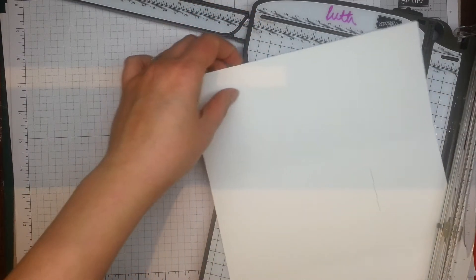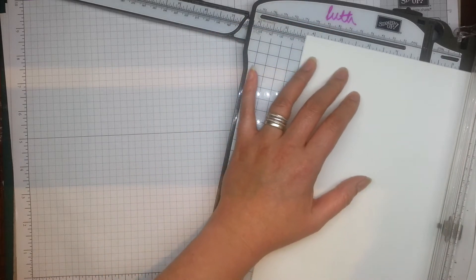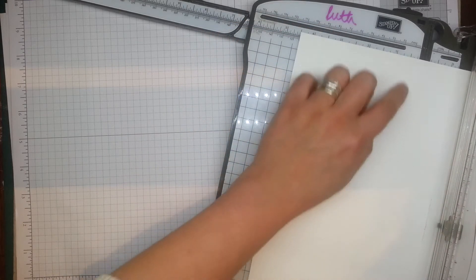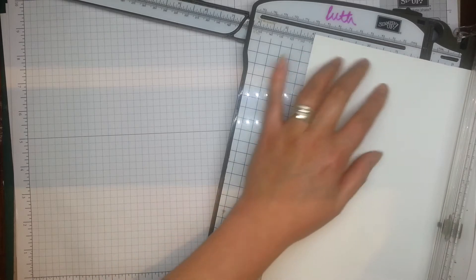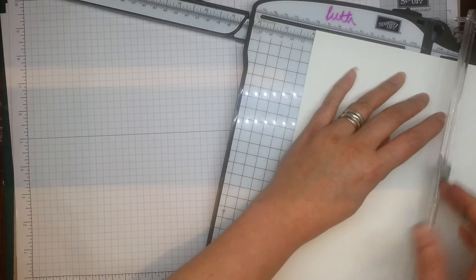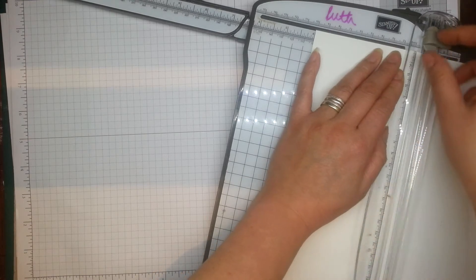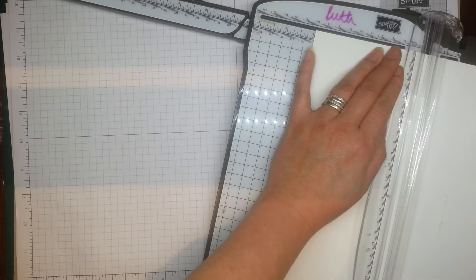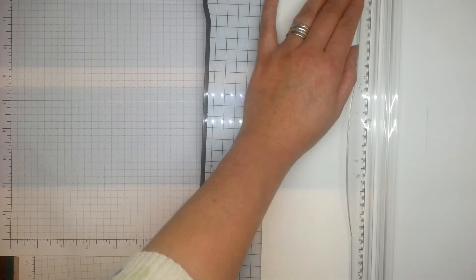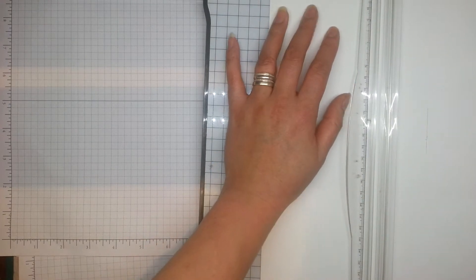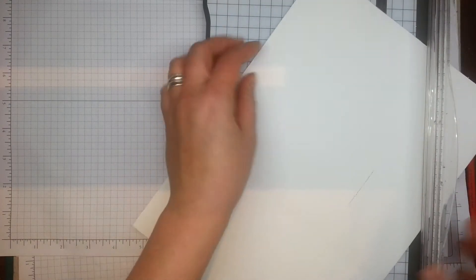And then I want to put a little score mark at about, I want 4 inches. So, it's either about 10 centimeters or 4 inches. I know you can't see that, but I'm scoring at the bottom as well.